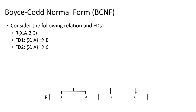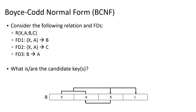Consider this example. We have a relation with the attributes x, a, b, c, d, and these functional dependencies: xa determines b, xa determines c (or together, xa determines b, c), and a third functional dependency where b functionally determines x. Let's find the closure of our determinants. The closure of xa — through reflexivity, xa can functionally determine x and a; through FD1, xa determines b; through FD2, xa determines c. So the closure of xa is xabc, which is all of the attributes in our relation.